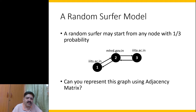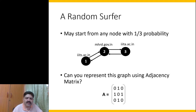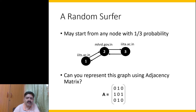We can model the web as a graph in this manner, and we can represent any graph using an adjacency matrix. Please pause the video here and write down the adjacency matrix for this model of the web. For iiits.ac.in, it is only connected to mhrt.gov.in. The second website is connected to number one and number three, so we have a one-zero-one on the adjacency matrix.